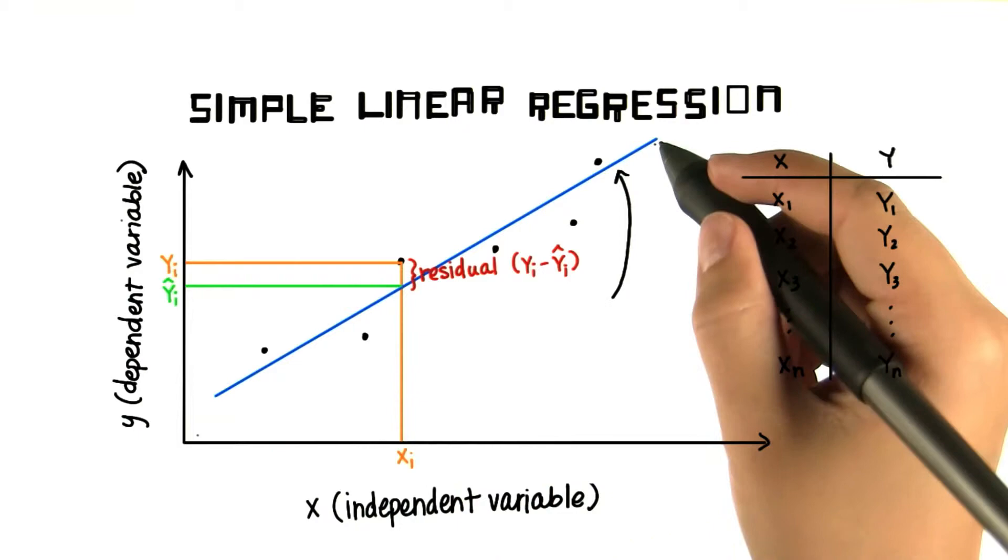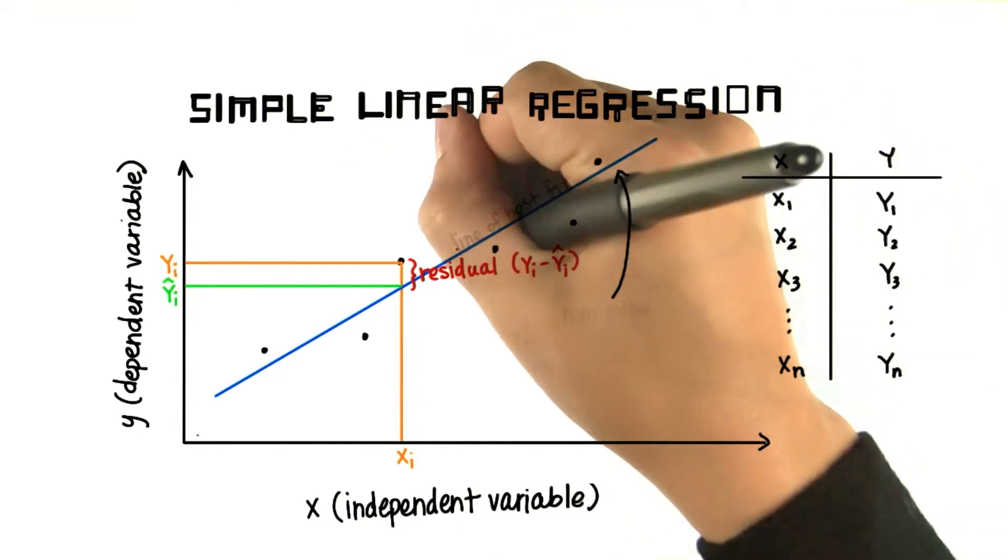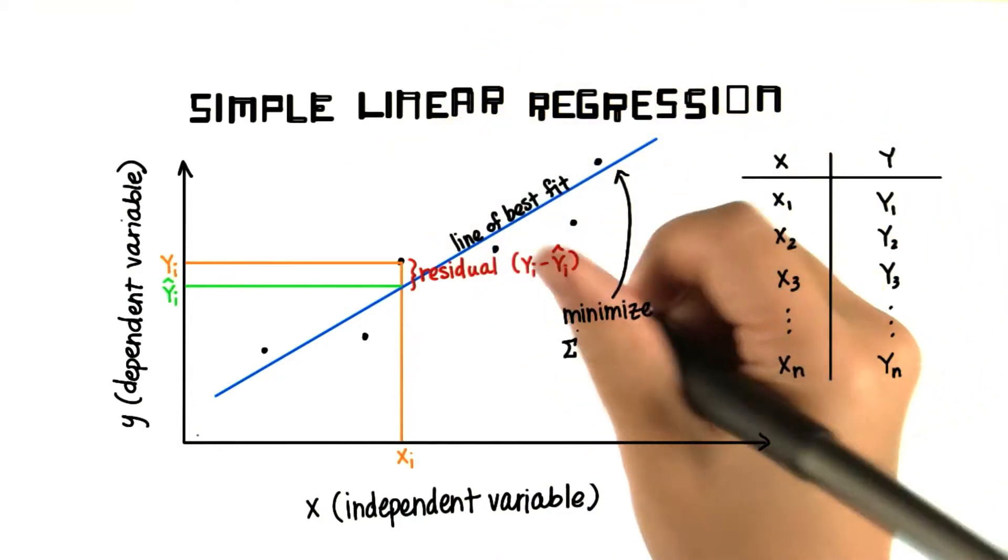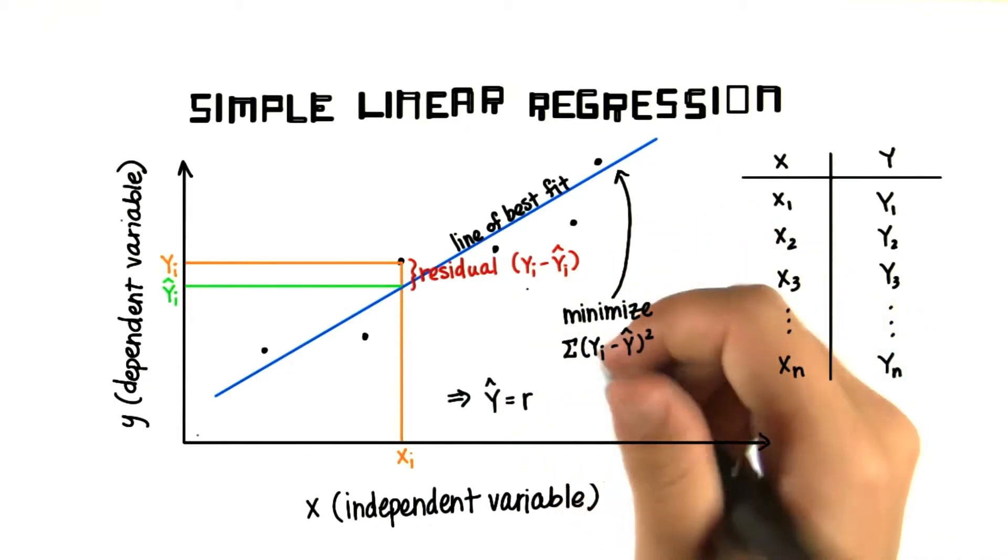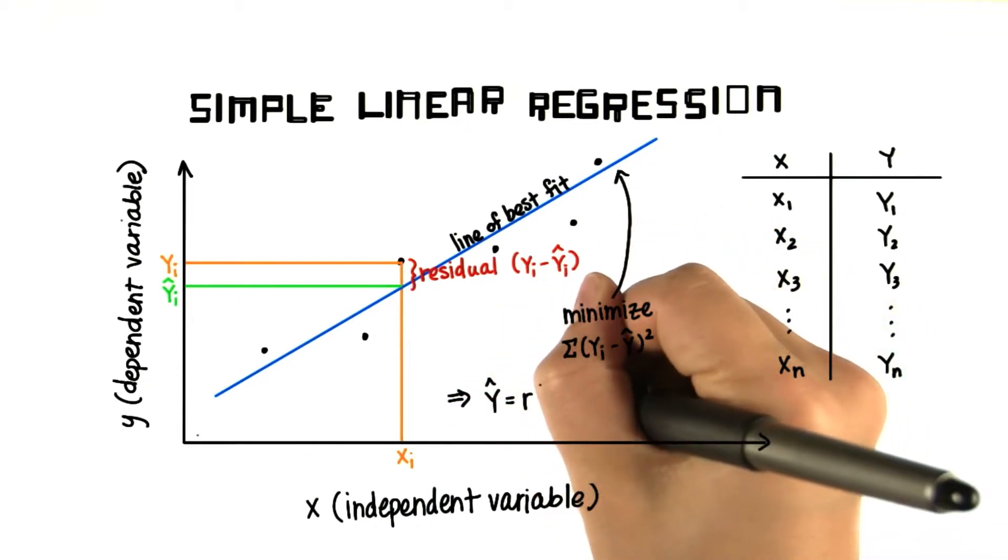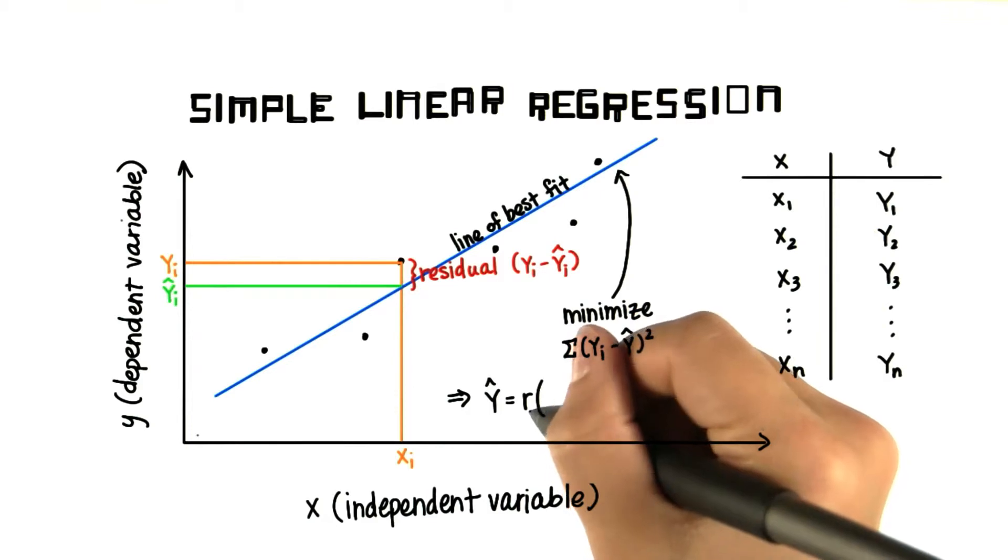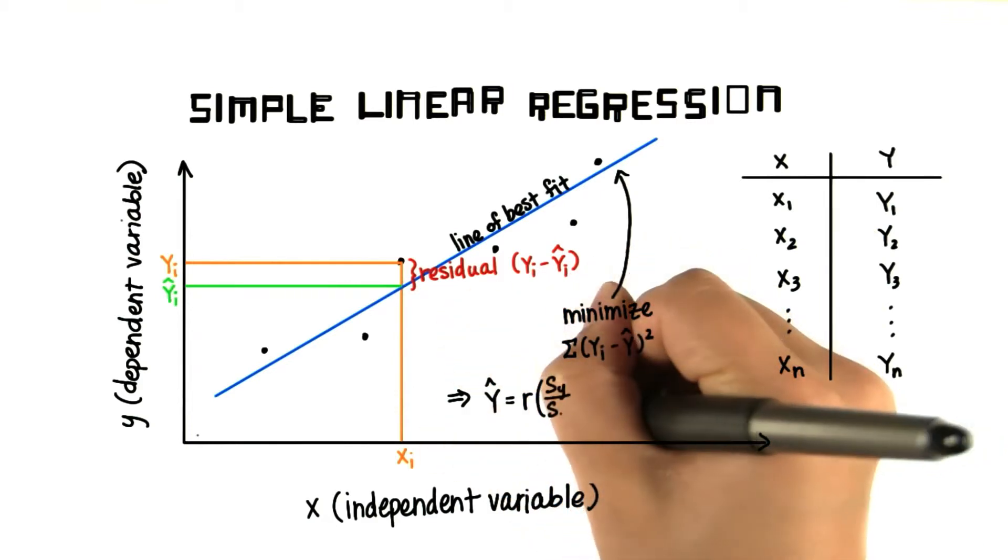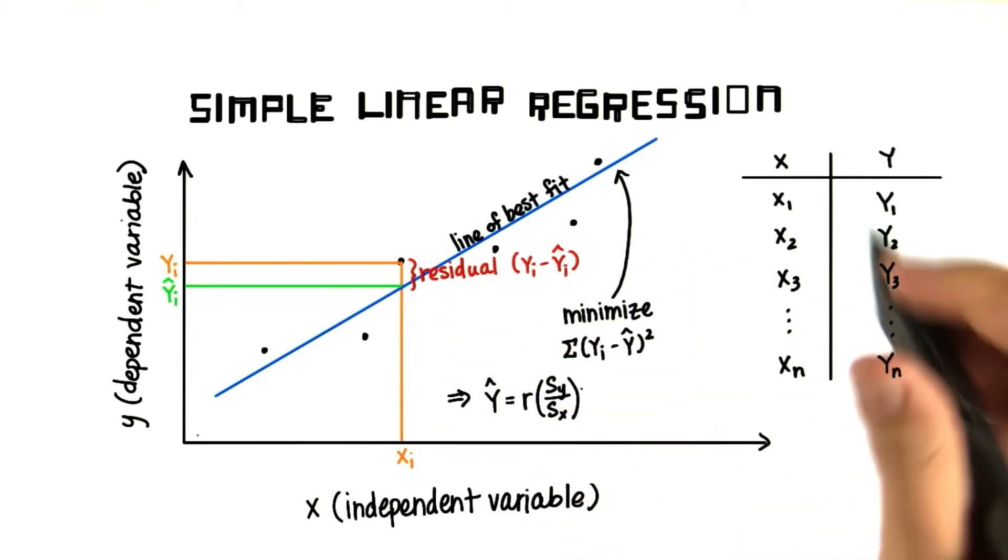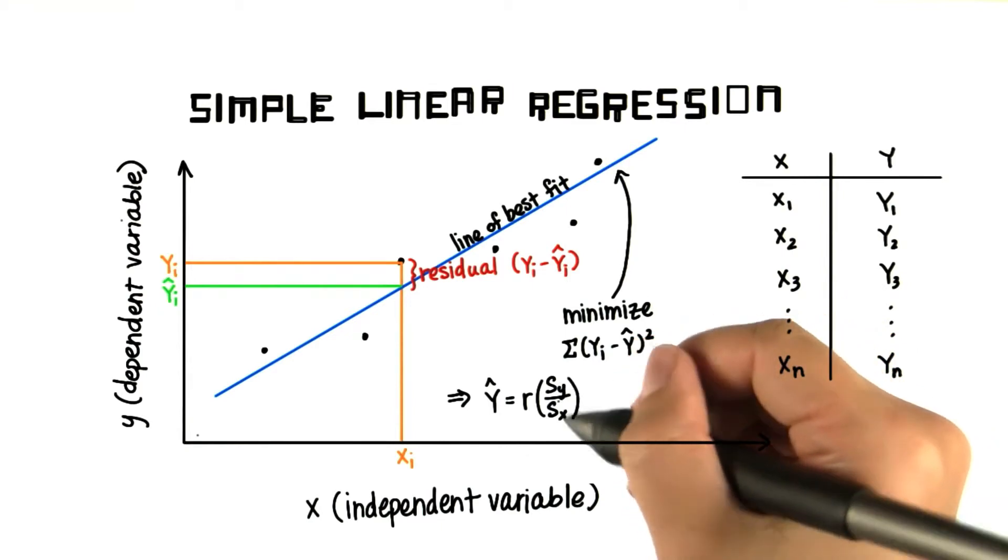We find the equation for our line of best fit by minimizing the sum of squared residuals. And we get that our regression line has a slope equal to r, Pearson's correlation coefficient, times the ratio of the standard deviations of the y to the x values.